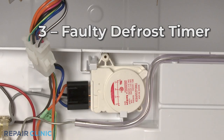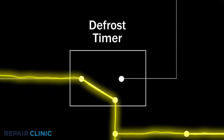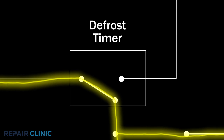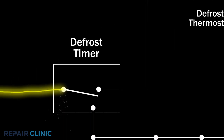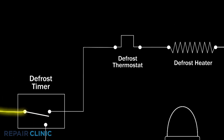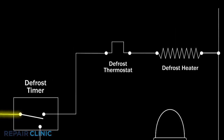Some models have a defrost timer which turns the heater on for about 25 minutes two or three times a day. A faulty timer may not advance into the defrost cycle or be able to send voltage to the heater during the cycle.